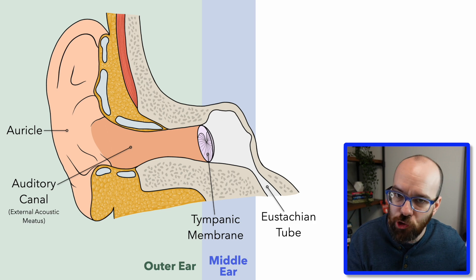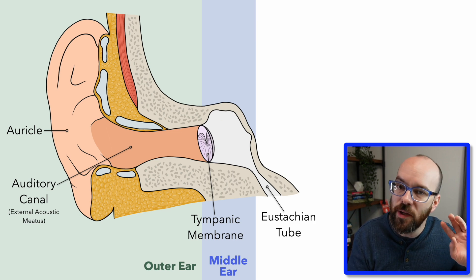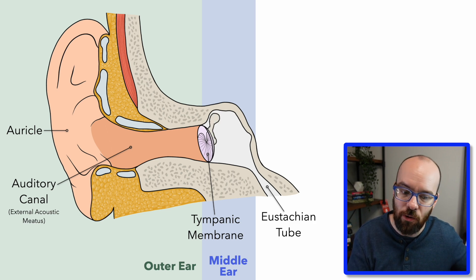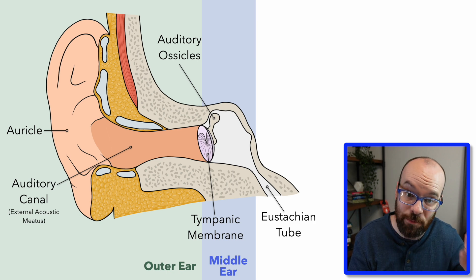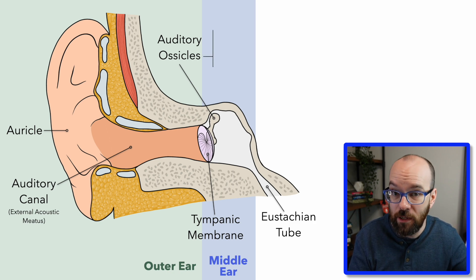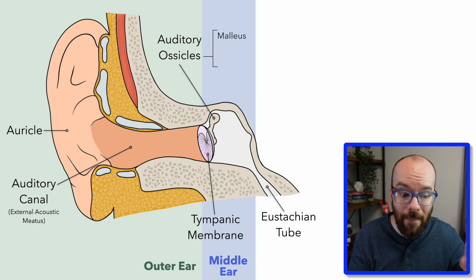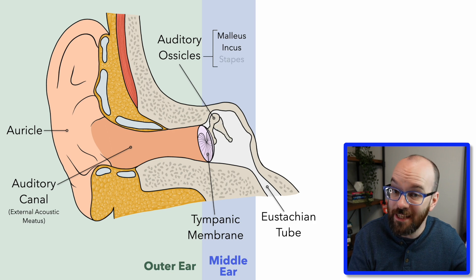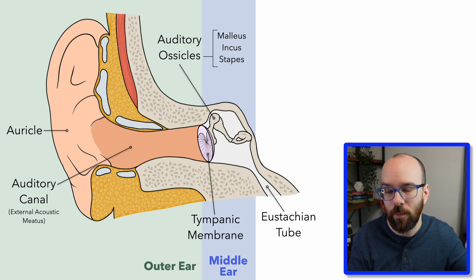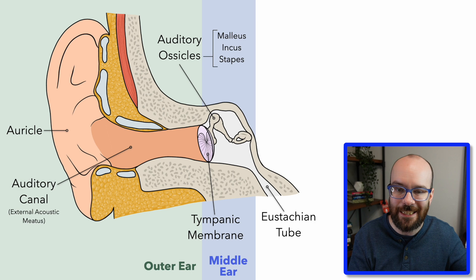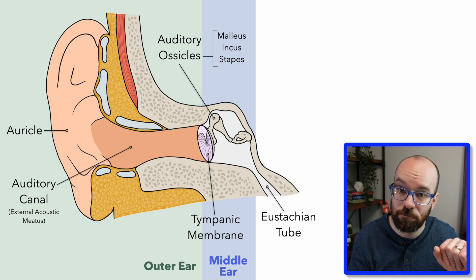Inside the middle ear, there's a set of three bones called the auditory ossicles — actually the tiniest bones in the human body. We've got three of them: the malleus, the incus, and the stapes, also known as the hammer, anvil, and stirrup. I'll call them malleus, incus, and stapes for this video.